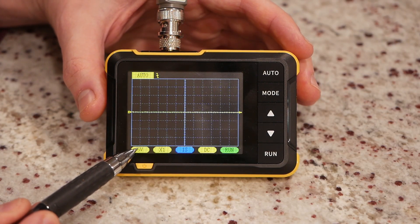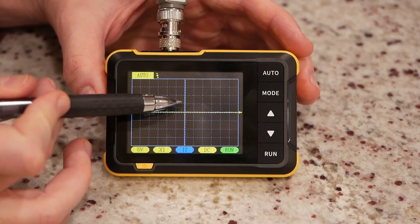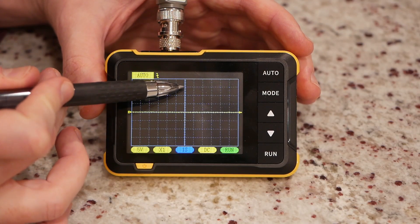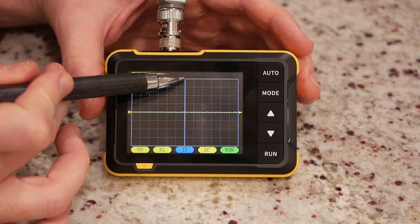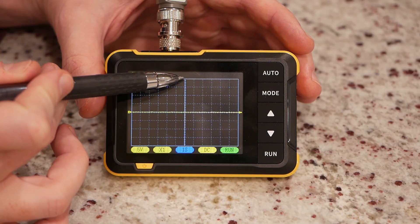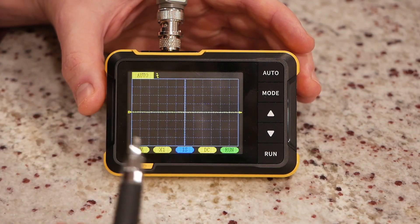So right now, it's set on 5 volts, and that means each of these minor ticks is 5 volts. So 5, 10, 15, 20. So we've got 20 volts positive and 20 volts negative on the y-axis.